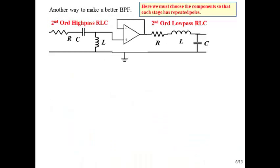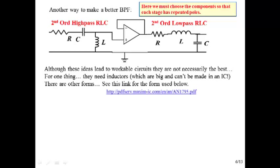Another way to make a bandpass filter, still using this buffer idea, is to take a second-order high-pass RLC and a second-order low-pass RLC circuit and cascade them. But again, using the buffer so that the two stages don't cause interaction between each other. And so now you have to choose the components so that each stage has repeated poles. So all of these are workable ideas, but they're not necessarily the most common. But it's a way of getting your feet wet and learning your way around.